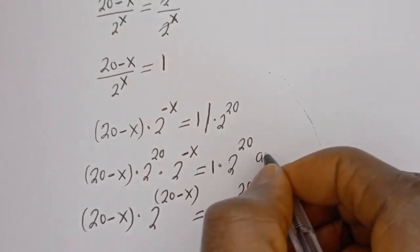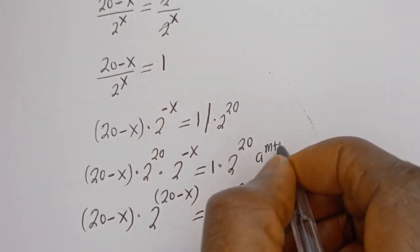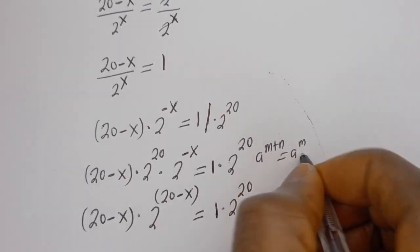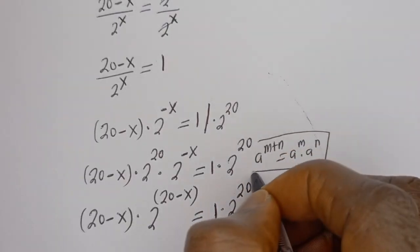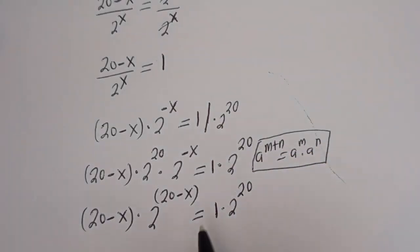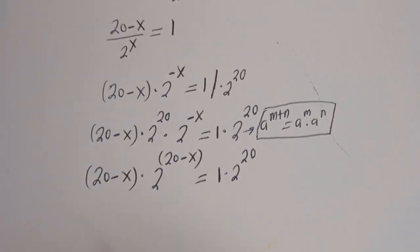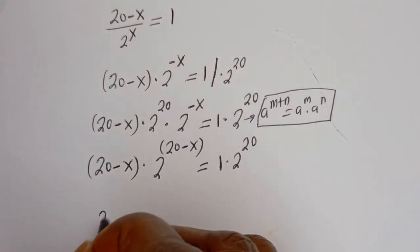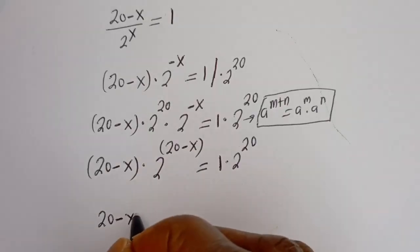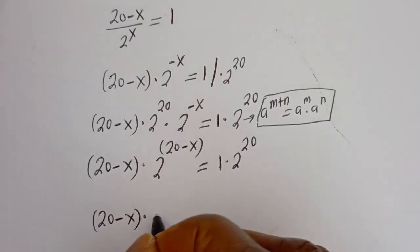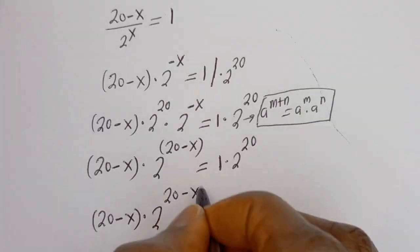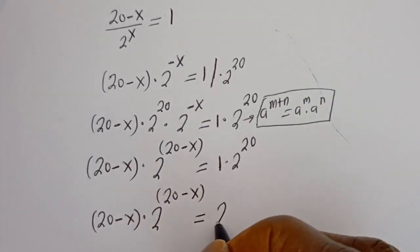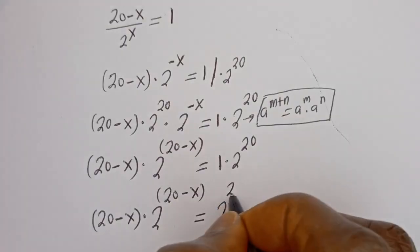Here we use the exponent rule: a to the power of m plus n is equal to a to the power of m multiplied by a to the power of n. So we have 20 minus x multiplied by 2 to the power of 20 minus x on the left side.